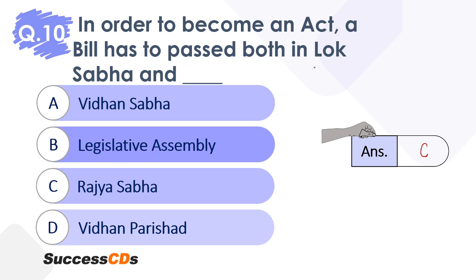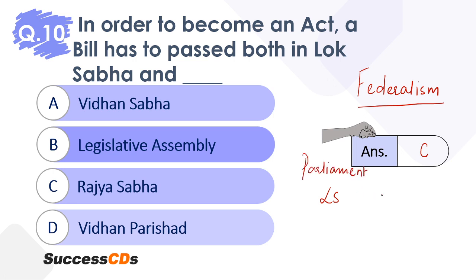So in order to become an act, a bill has to be passed both in Lok Sabha and Rajya Sabha. Why? Because India follows a federal structure — the principle of federalism. When we talk about the Sabhas, these are at the centre, meaning Parliament has two houses: Lok Sabha and Rajya Sabha, as you studied in Chapter 3. Vidhan Sabha, Legislative Assembly, and Vidhan Parishat — these all belong to the states. That is why the correct answer here is Rajya Sabha.